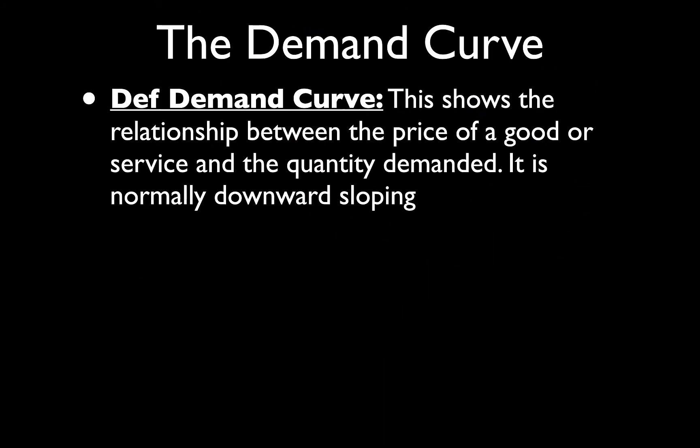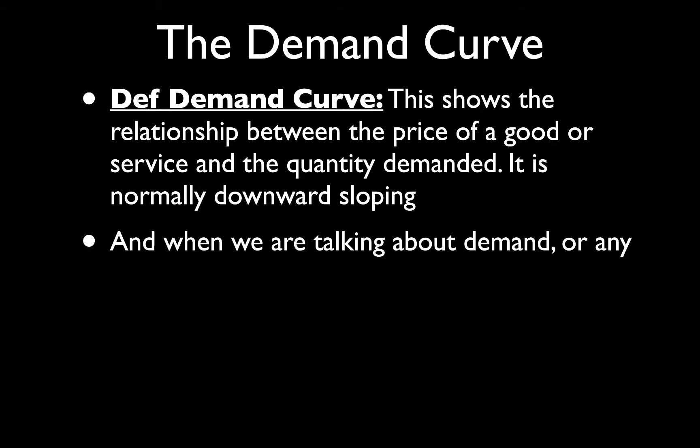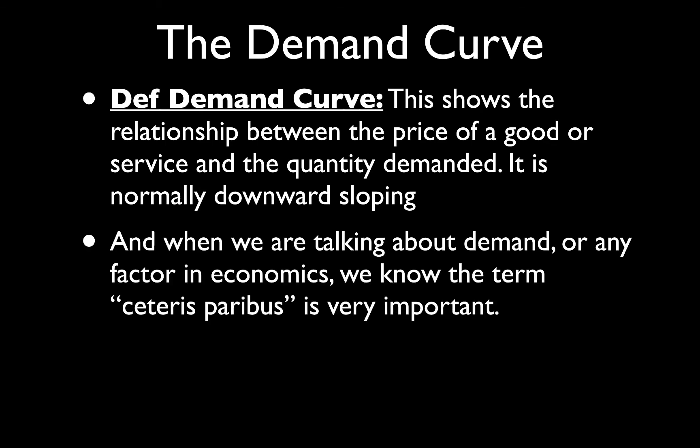The first thing is the demand curve. The definition for this is: it shows the relationship between the price of a good or service and the quantity that is bought — the quantity demanded — and is normally downward sloping.